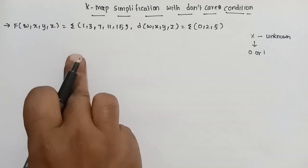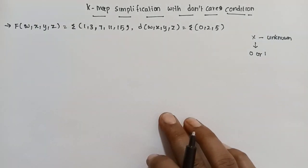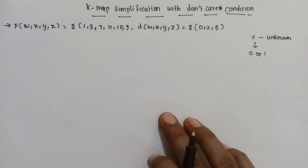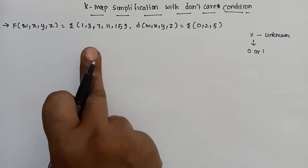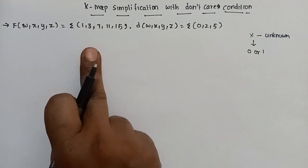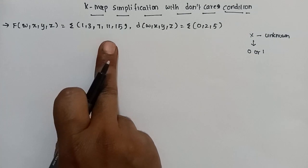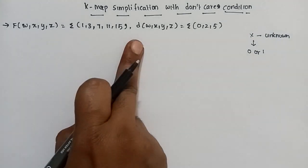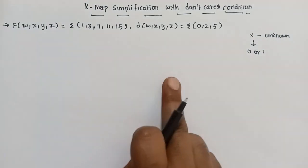The 4 variables are W, X, Y, Z. We will see the min terms and the max terms. The min terms are 1, 3, 7, 11, 5. Now we have those 5. So the max terms.